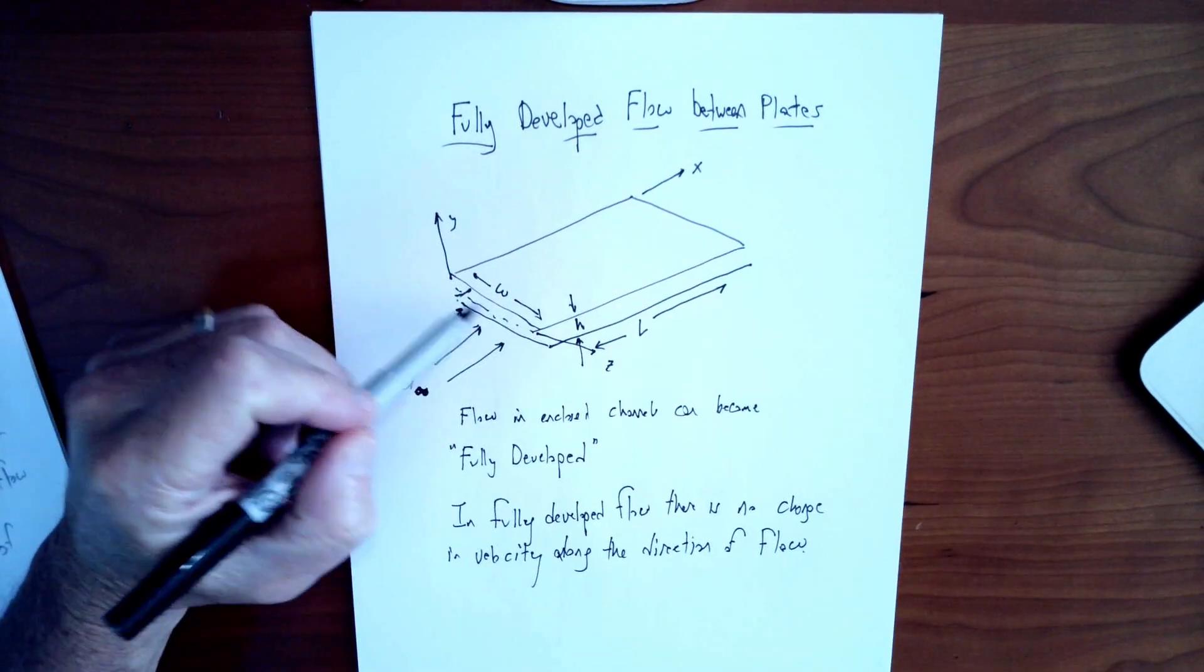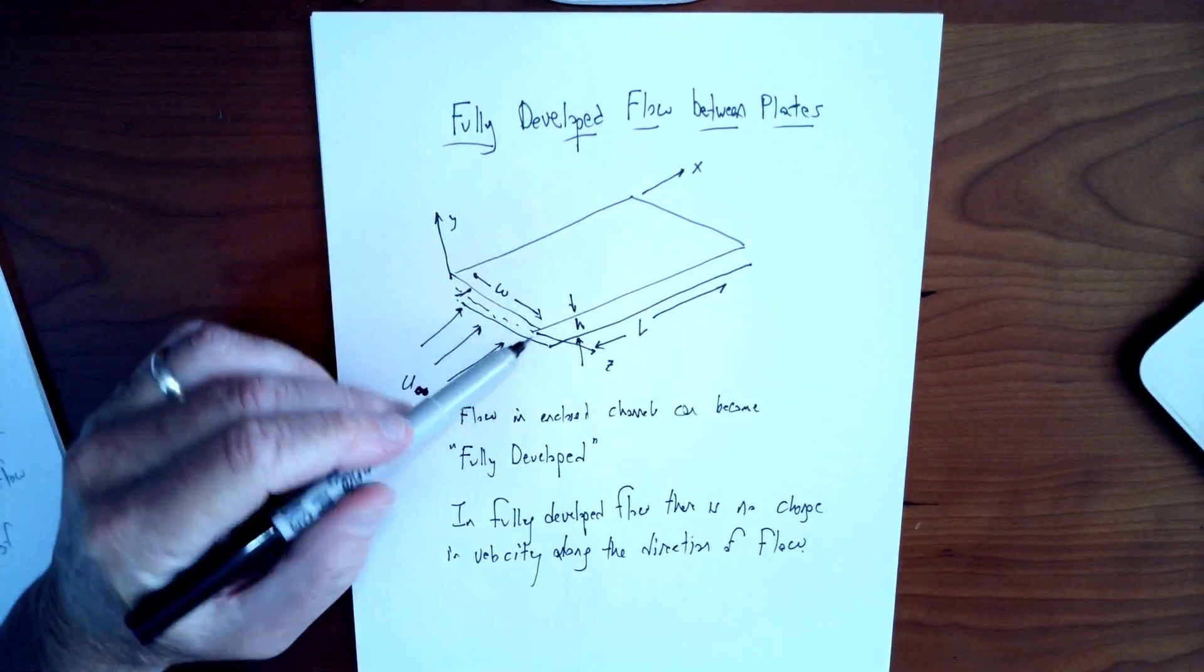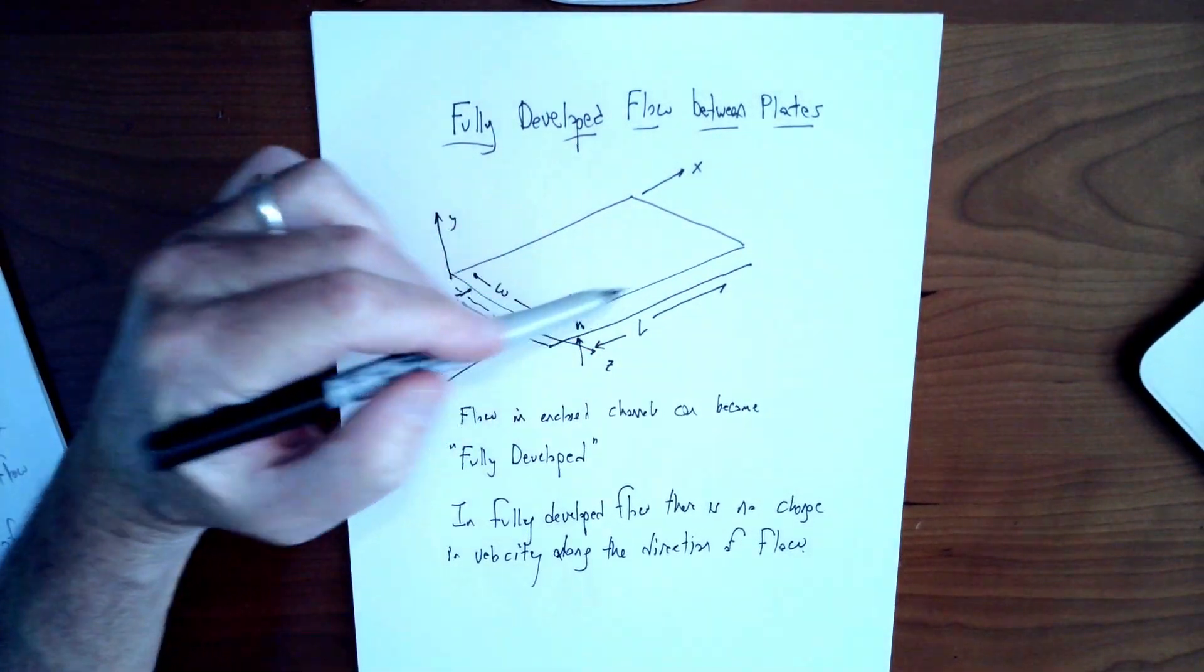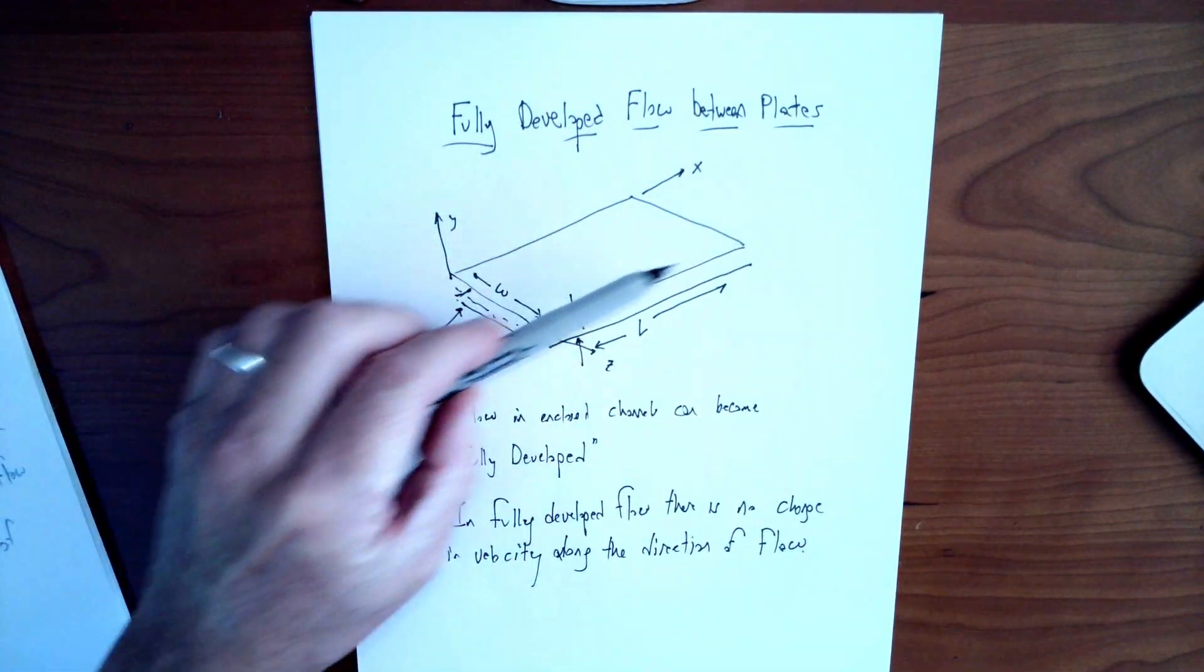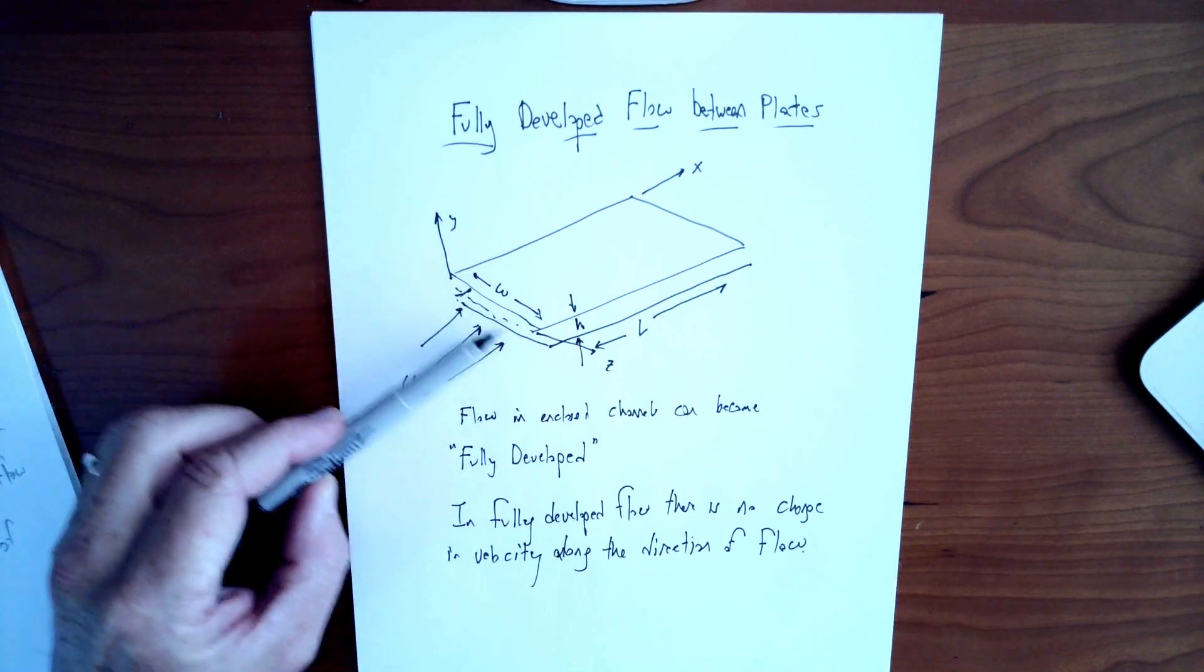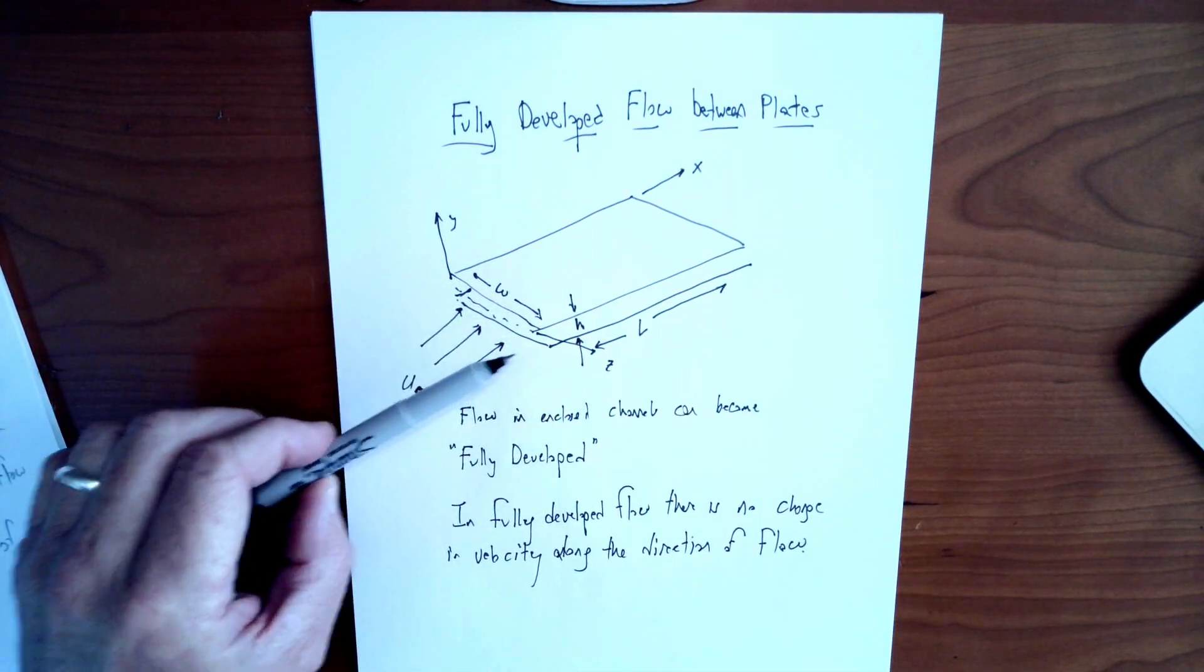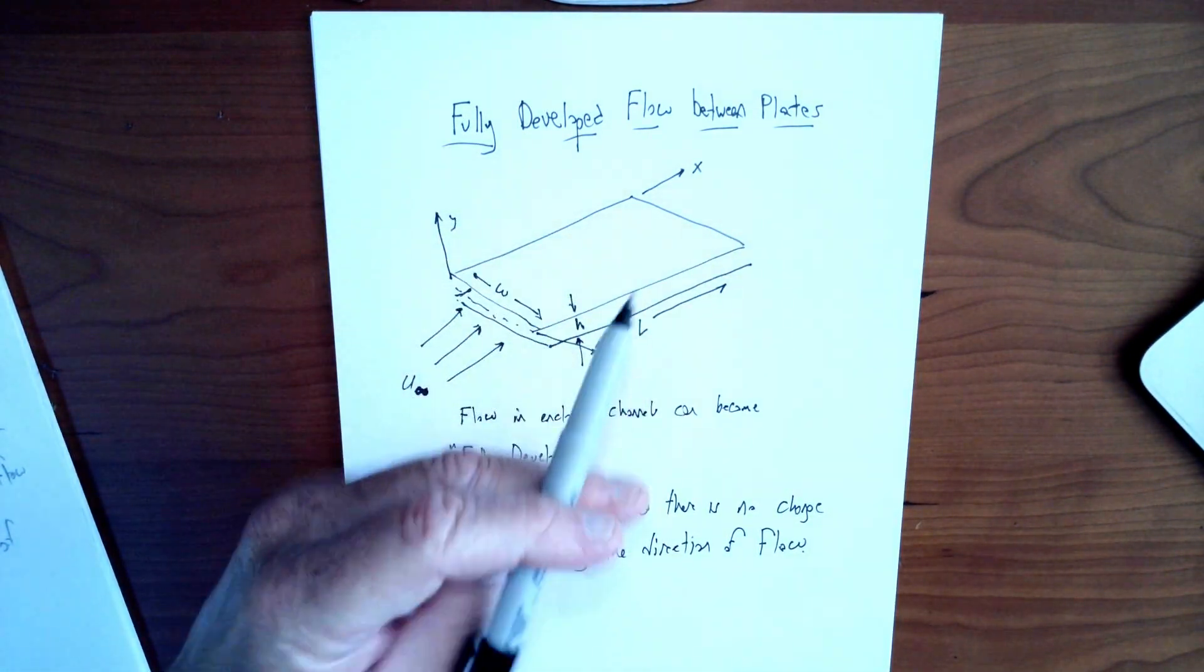The gap is small relative to the length or the width. So it's a wide, long channel with the fluid going down the x direction. The fluid is coming in at the entrance, perhaps with a uniform velocity, and then it's going into that channel between the two plates.